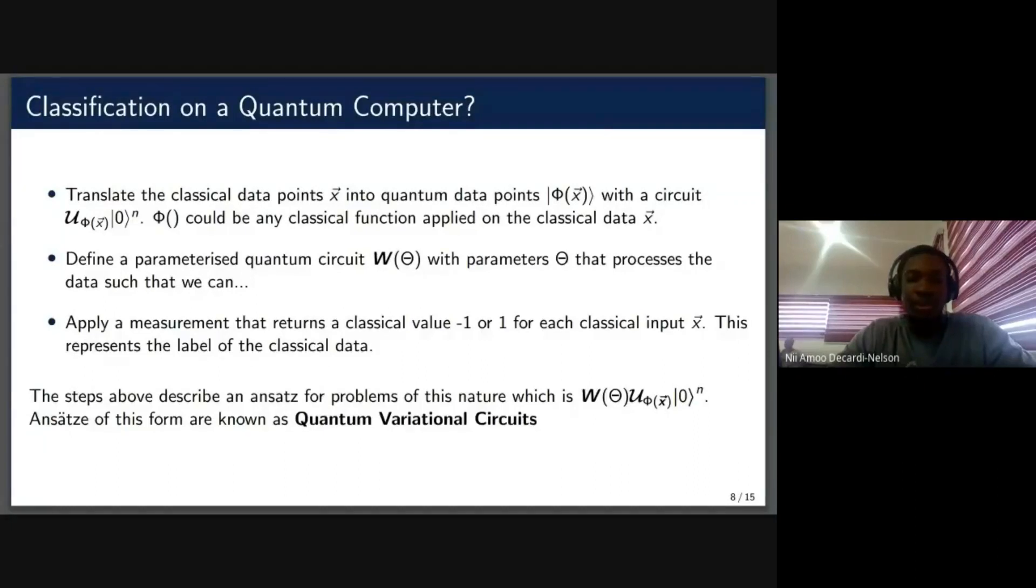The next step would be to define a parameterized quantum circuit with parameter theta. This theta would be something that you can train, such as in a similar way that we train the weights for a neural network. And then finally, we apply a measurement that would return the classical value. So negative one or one for the two classes that we are interested in.